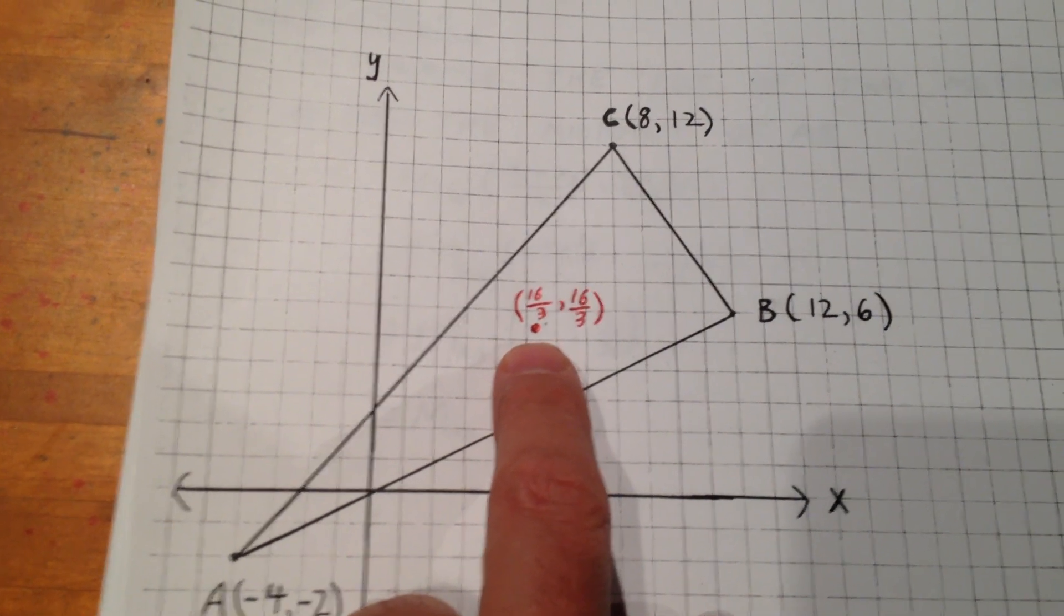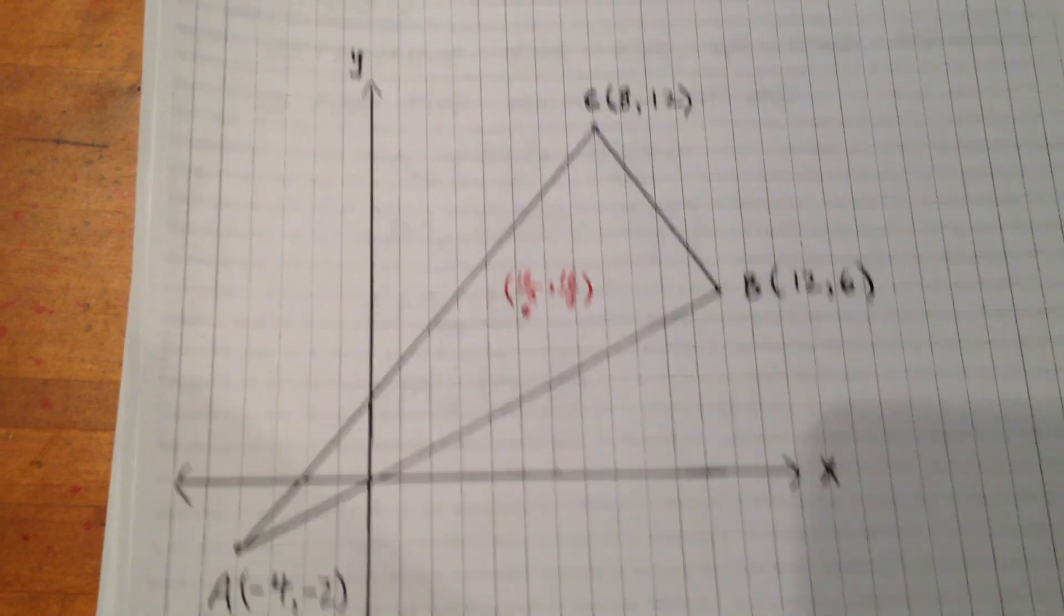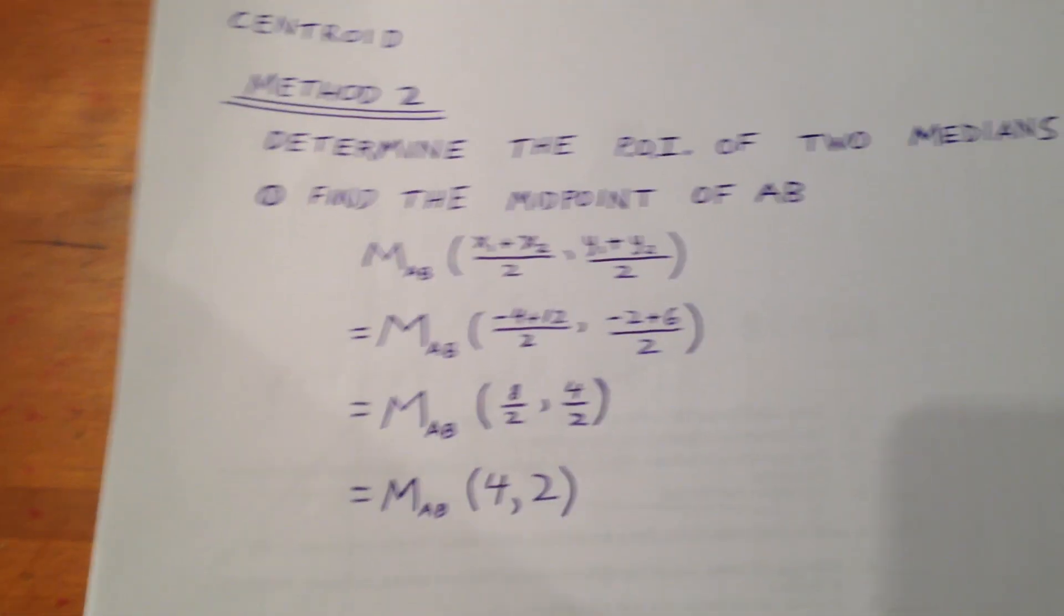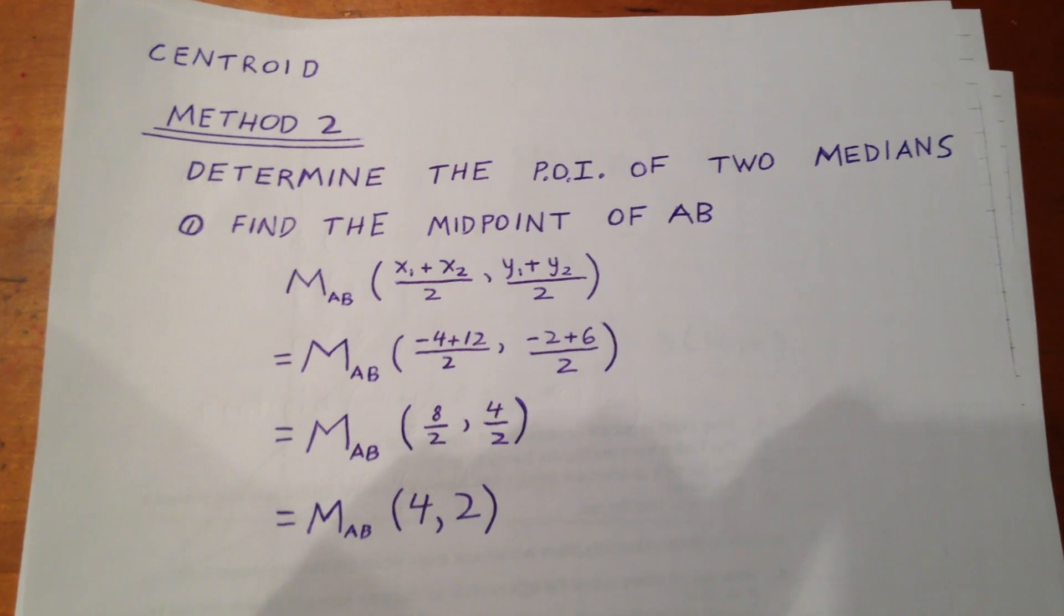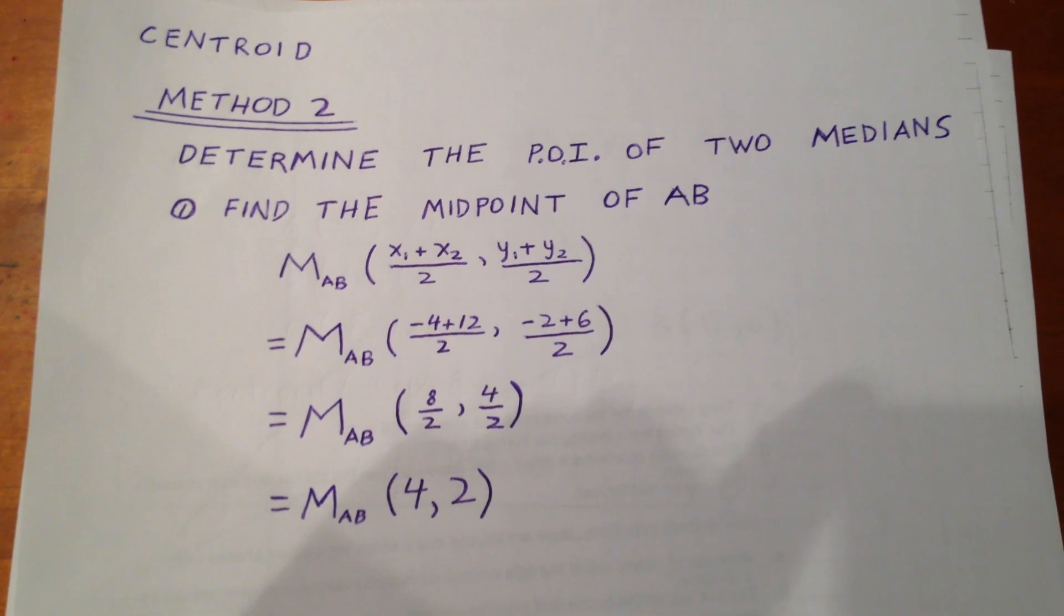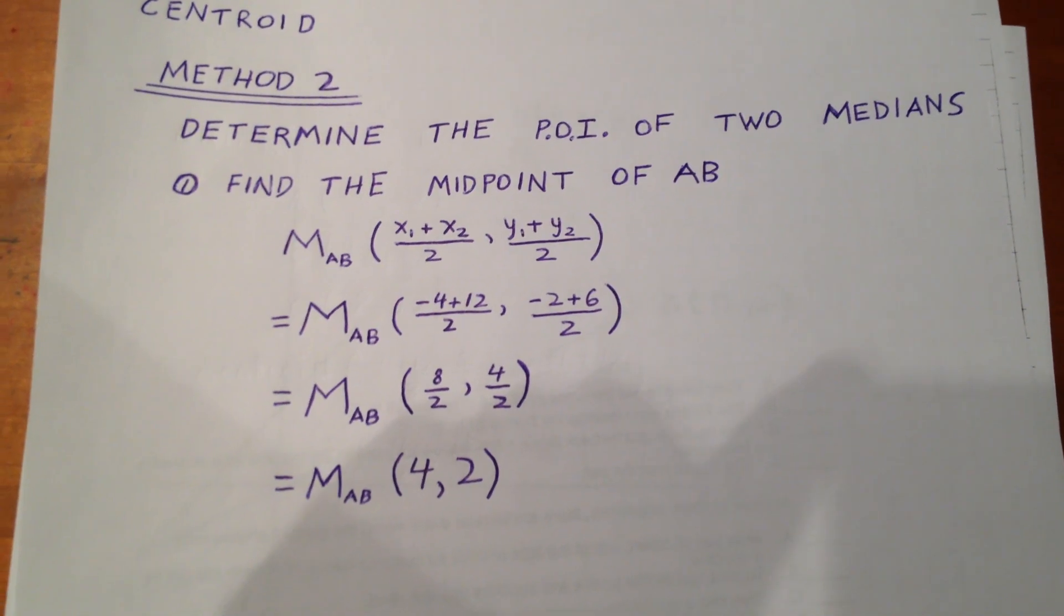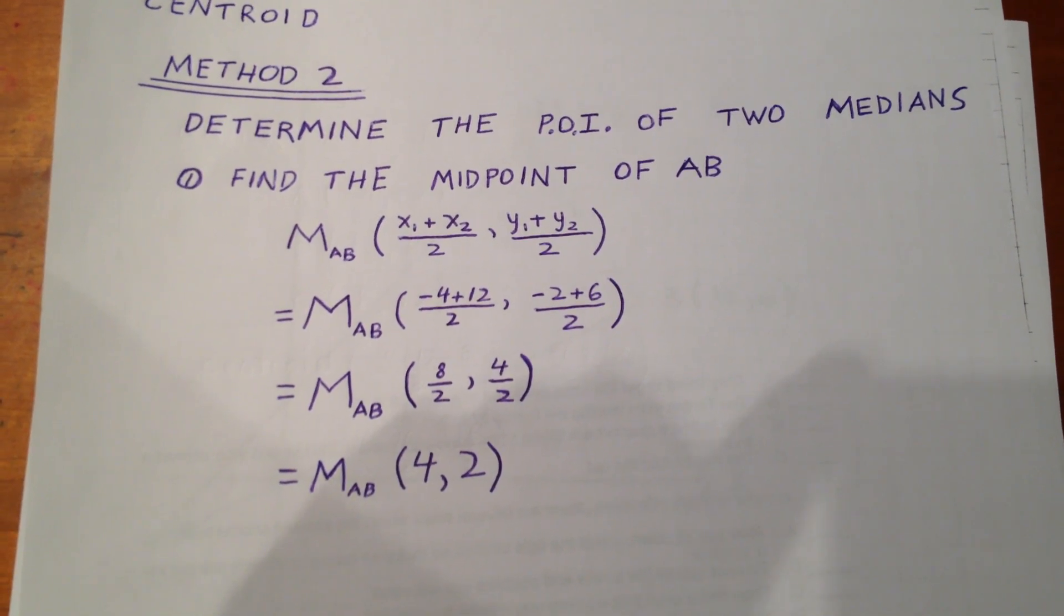Now, the question, though, might ask you to do it the longer way. The longer way, we'll call it method 2. What we want to do in this case is determine the point of intersection of two medians. In order to do that, our first order of business will be to determine the midpoint of AB.